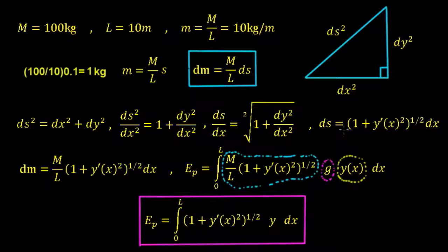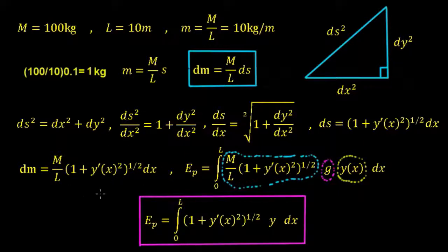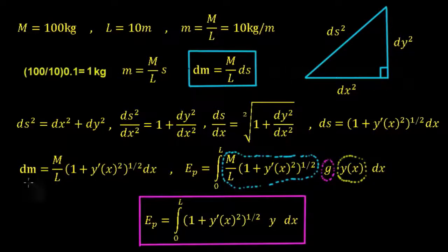So now we have our value for ds. We substitute this back into the dm equation, giving us dm equals the mass per unit length times (1 + y′²)^(1/2) times dx. That expression tells us the mass of one small infinitesimal element of the rope.